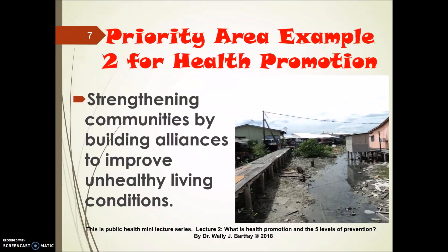Priority area number two involves strengthening communities by building alliances to improve unhealthy living conditions. There is a growing global recognition that health is not only influenced by one's biology or genetic makeup, but is also greatly impacted by a variety of determinants of health, including the environment where one lives, loves, works, and plays. Poverty is a major social determinant of health.